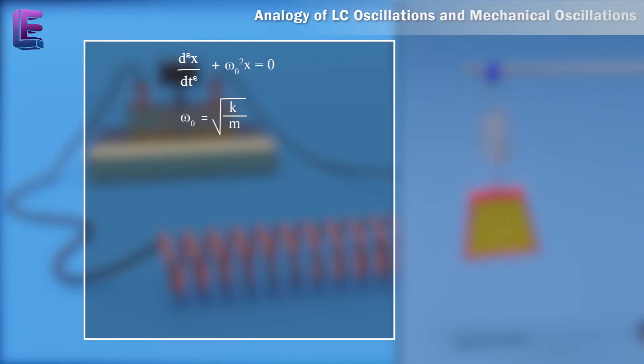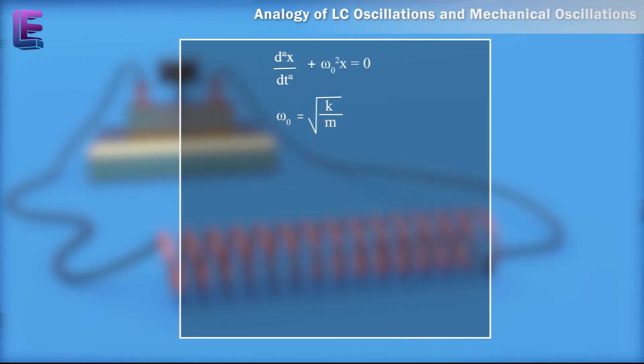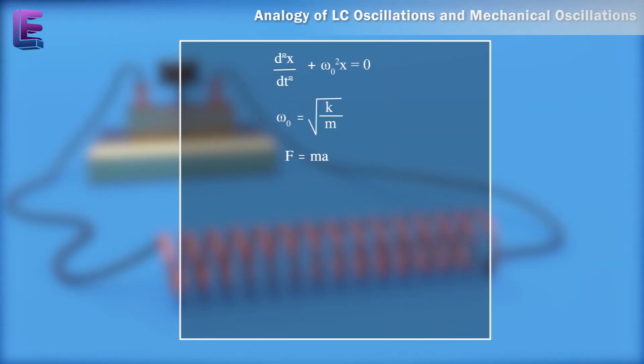Here, omega-0 equals root over k by m, where k is the spring constant. x corresponds to q. In case of a mechanical system f equals ma equals m dv by dt equals m into d square x by dt square. For an electrical system, sigma equals minus L into d square x by dt square. Comparing these two equations, we see that L is analogous to mass m.